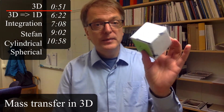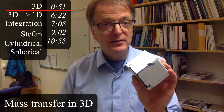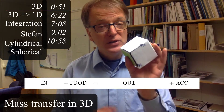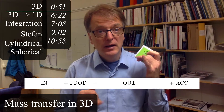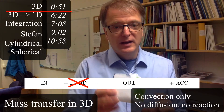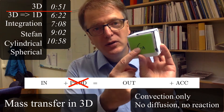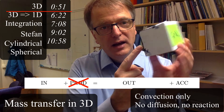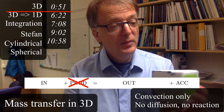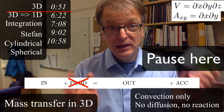Here we have an infinitesimal cube. Let's make a mass balance: in plus production equals out plus accumulation. We'll simplify to only convection, no reaction and no diffusion. If everything happens in the z-axis direction, the cube has concentration CA on one side and CA plus dCA on the other side. The volume is dx times dy times dz. Pause here and try that yourself.